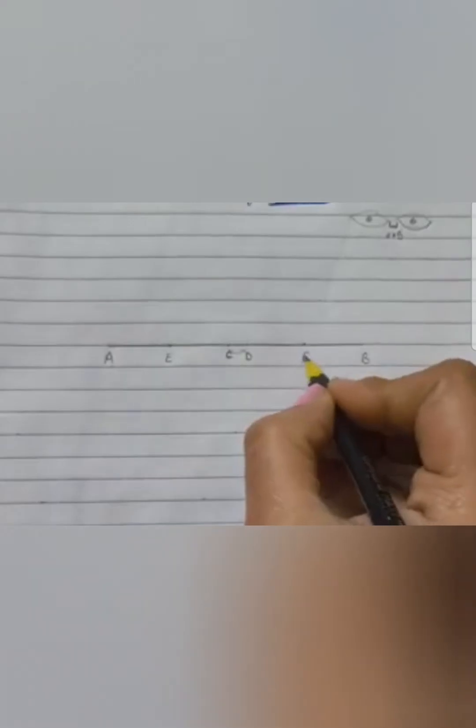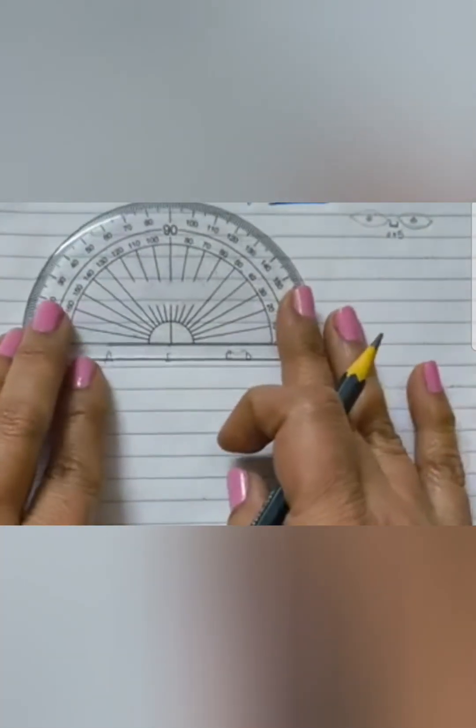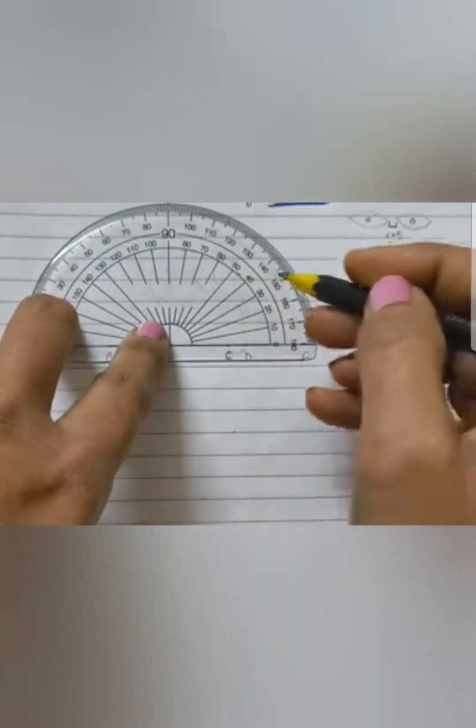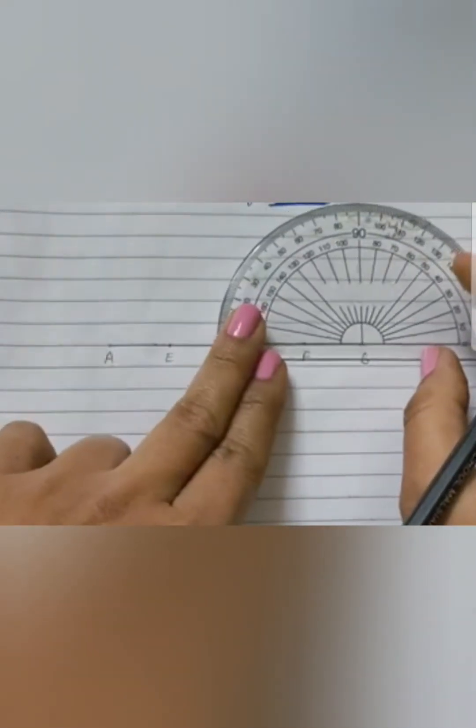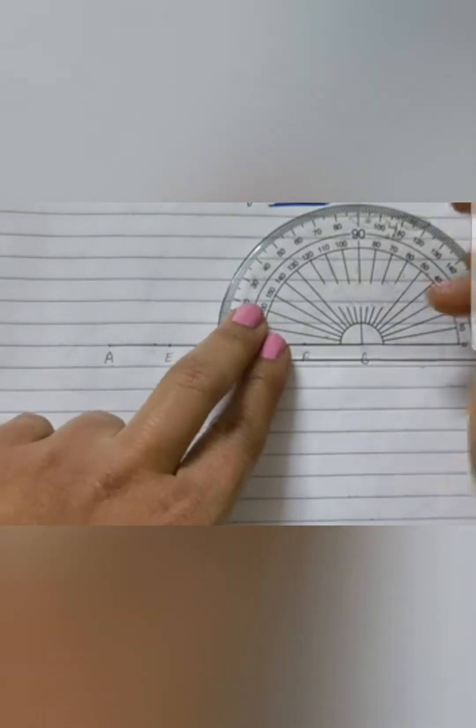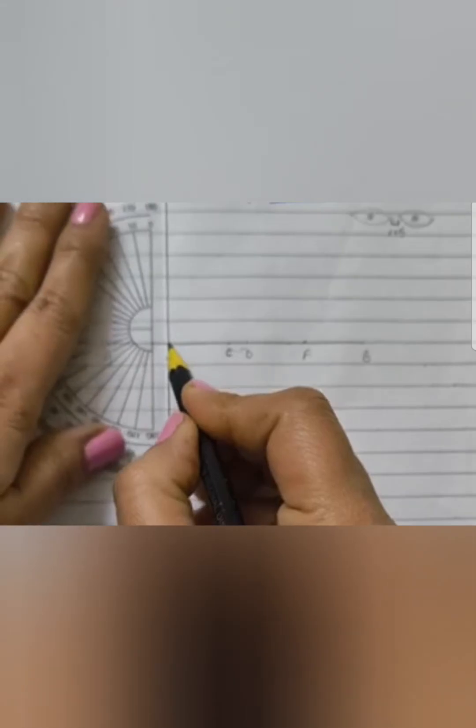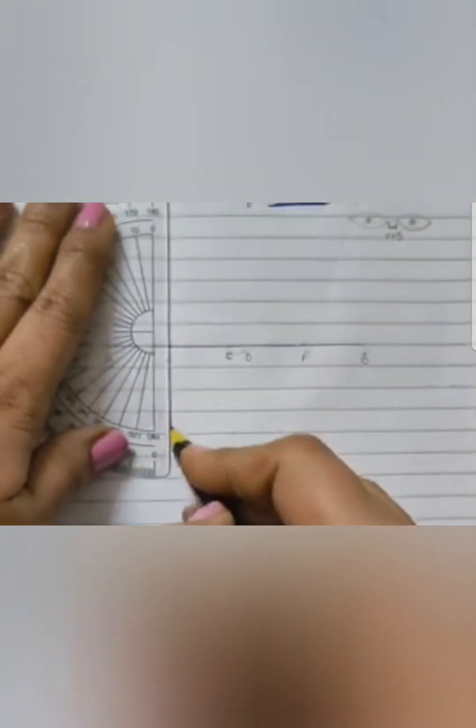Naming it as E and F. With E as center, with the protractor I am going to draw a perpendicular line. Same way, with F as center, I am going to draw a perpendicular line above and below the line.